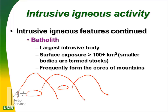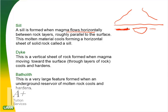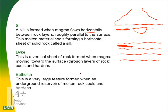A sill forms when magma flows horizontally between rock layers and solidifies. To draw a sill: draw the strata of rocks (layers) and a horizontal feature between them — that is the sill. A dike is a vertical sheet formed when magma moves towards the surface through the layers — it is vertical.